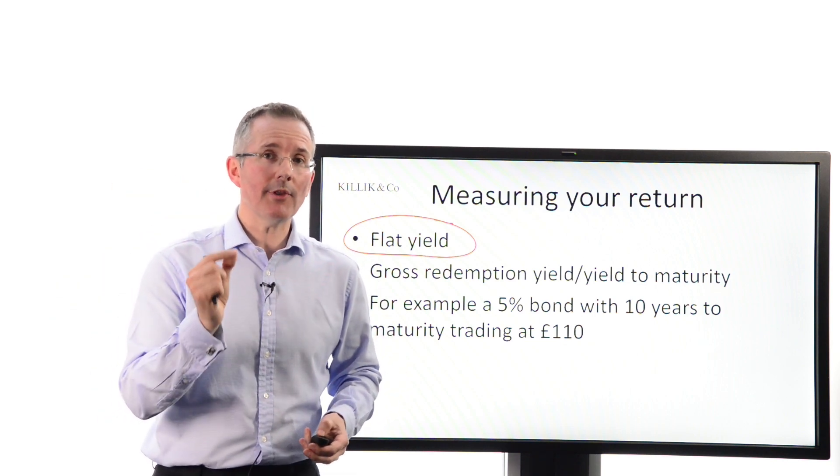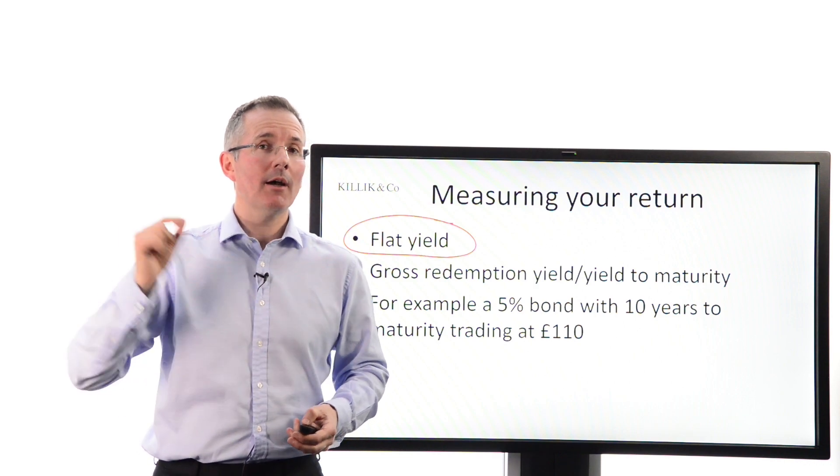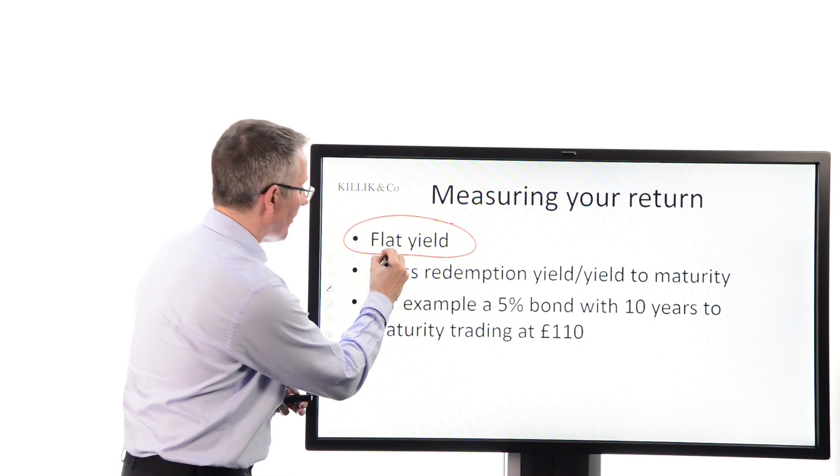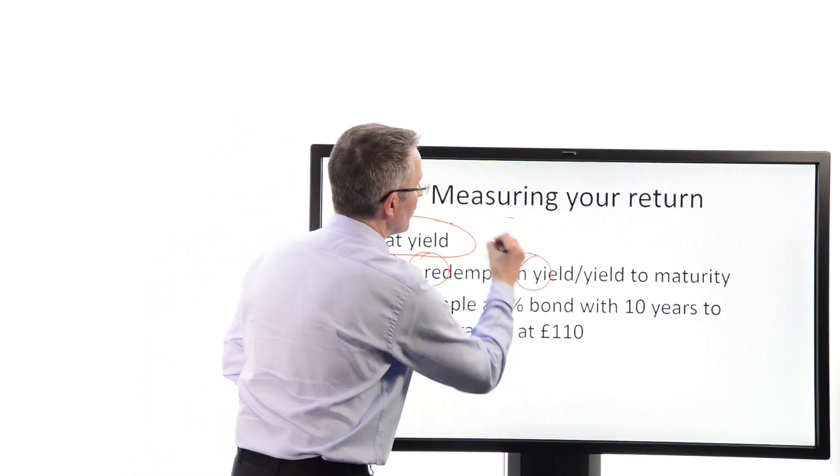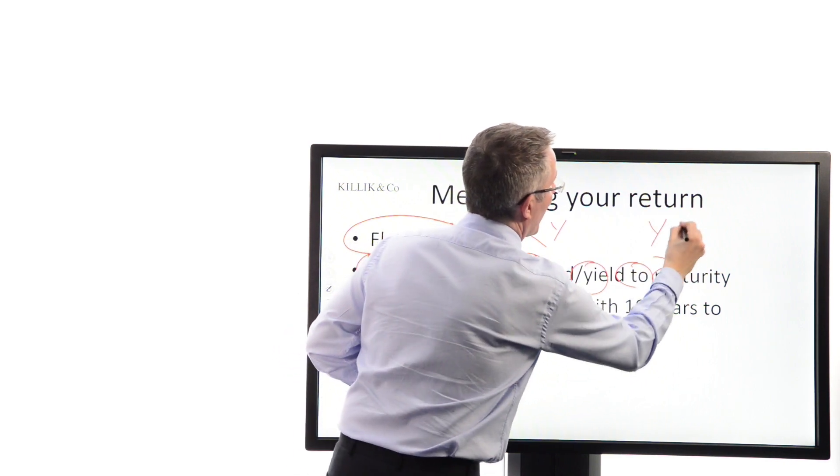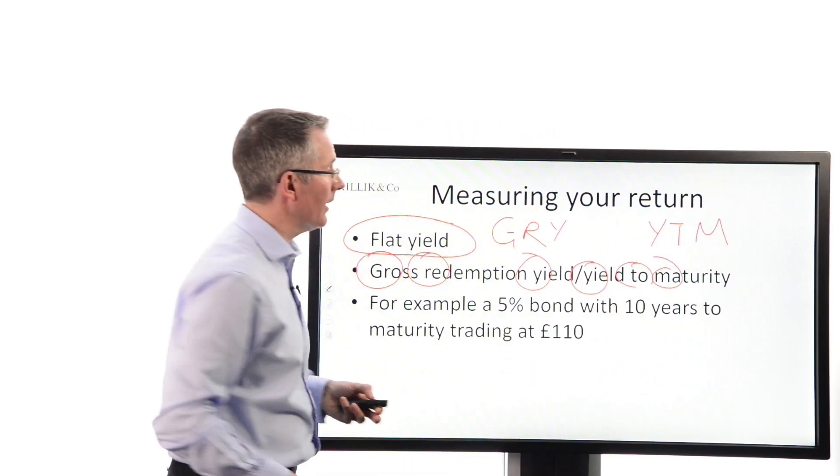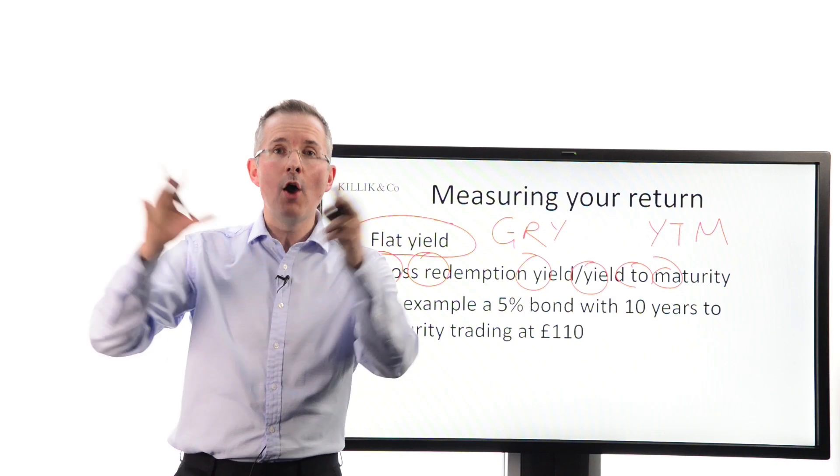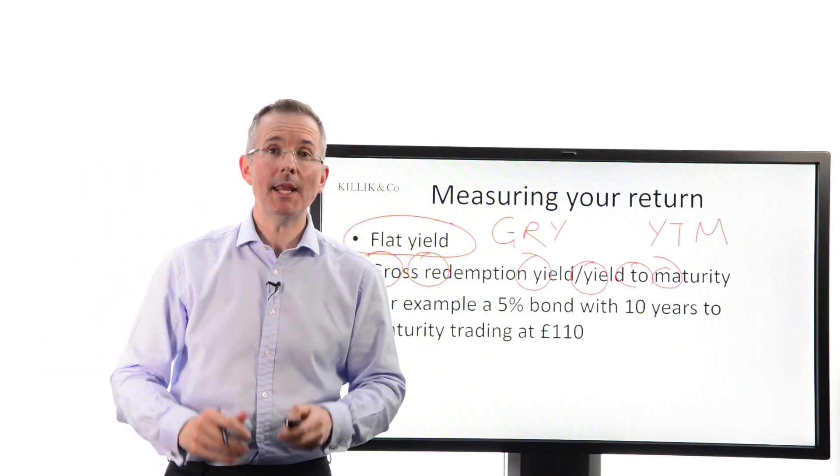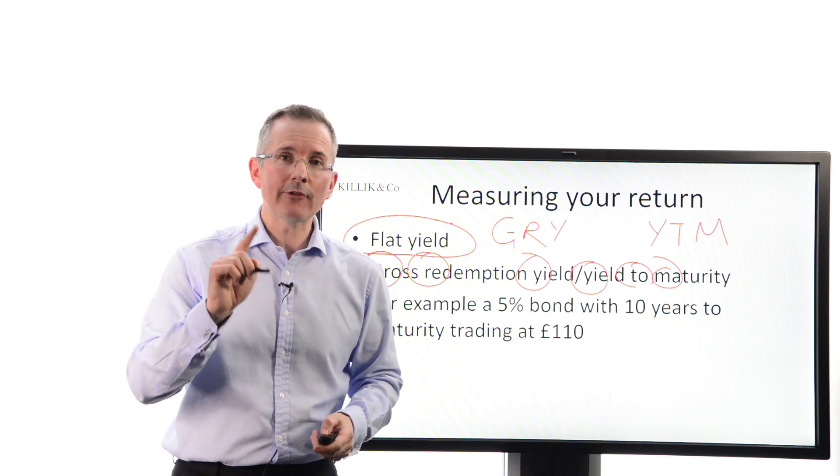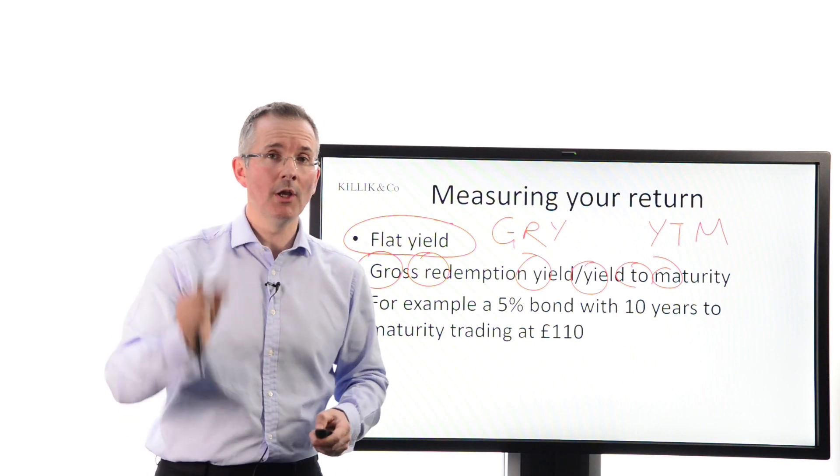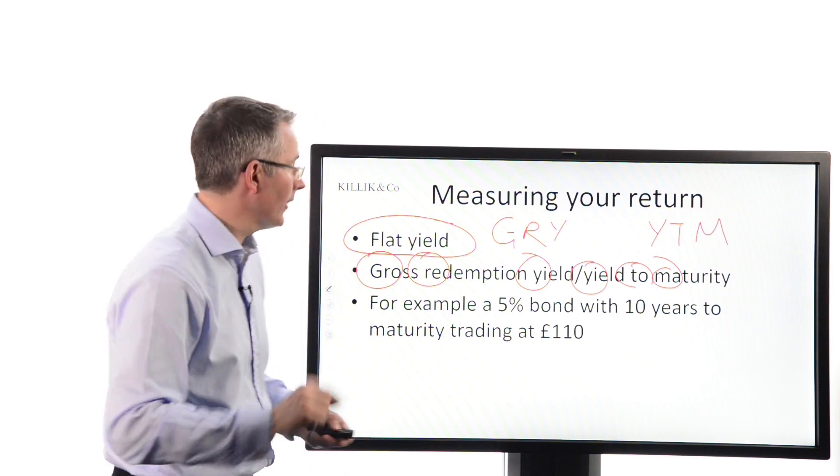But because the price of these things can fluctuate above or below that £100 nominal value, be aware that there is another calculation called the GRY, gross redemption yield, or the yield to maturity, the YTM, lots of jargon here, which is your total pre-tax return, if you want to see it that way, hence the word gross, factoring in any capital gain or loss. So how would that work? Quick snapshot. Normally, these numbers are handed to you. I'm going to take a shortcut on the calculator in the second one, just to give you a flavour of how that works.